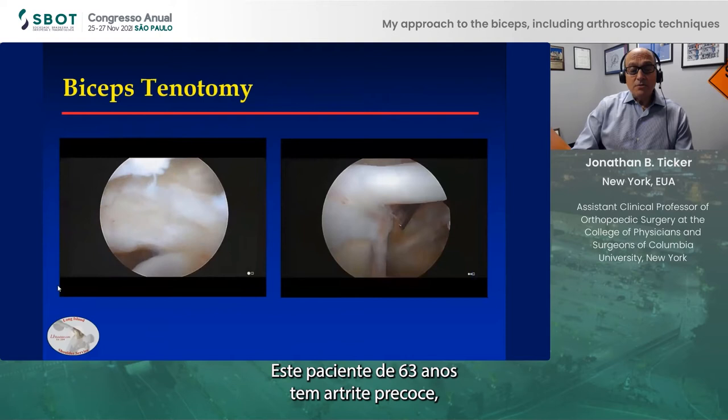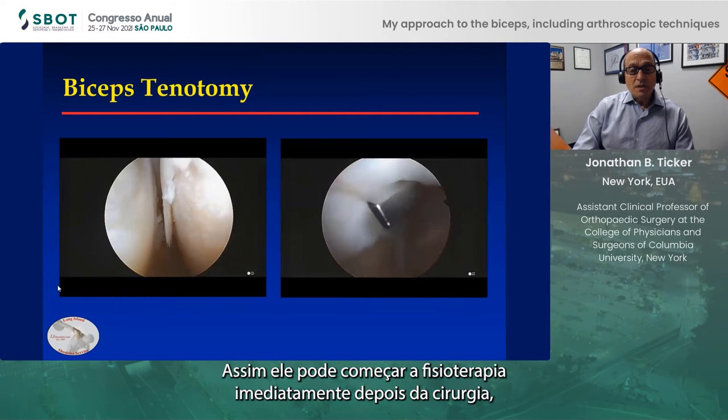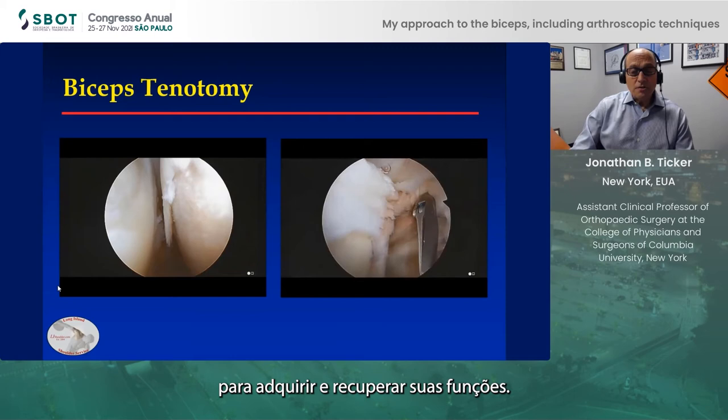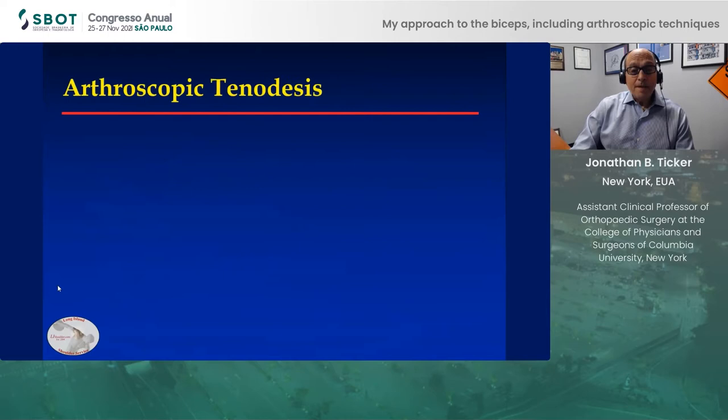This is a patient who's 63 with early-onset arthritis, and he was amenable to an arthroscopic tenotomy, which I did here with the scissors. This allows him to start therapy immediately postoperatively to gain and restore his function. But in the end, the combination includes the patient's preferences, and they trump what I want.